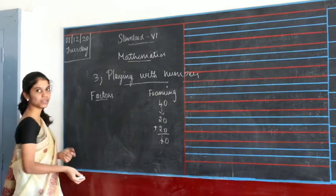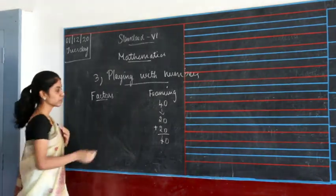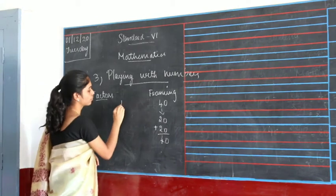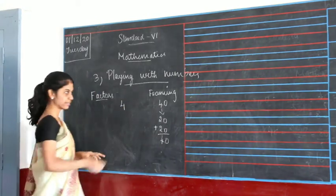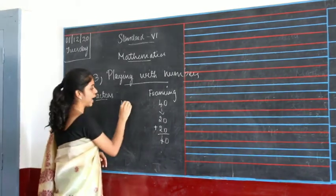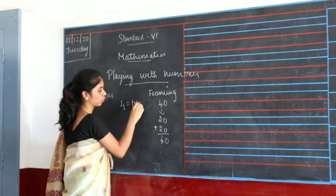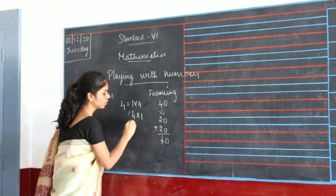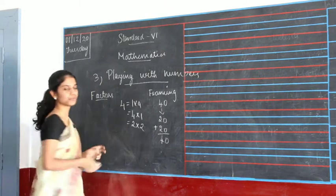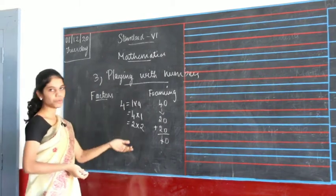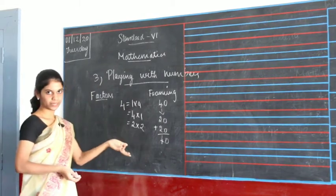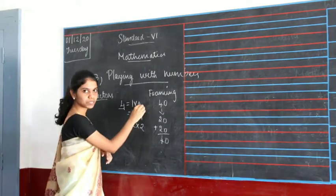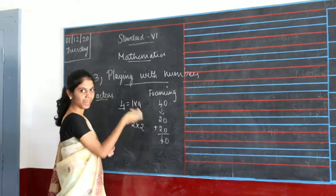For example, let's say you have the number 4. You can write this as 1 into 4, or 4 into 1, or 2 into 2 — two 2s are 4. So this is how you do it: you represent a number in terms of other numbers using multiplication.